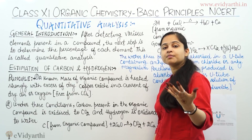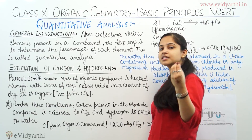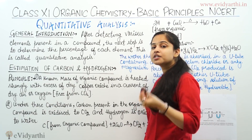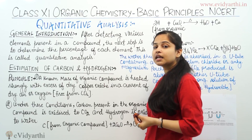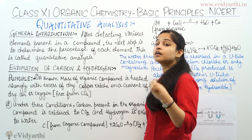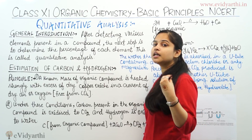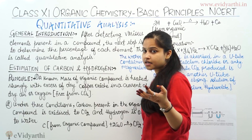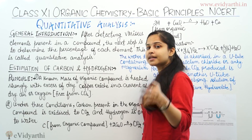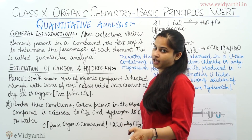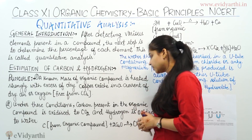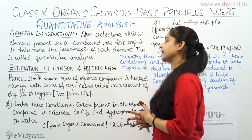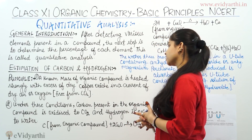In Qualitative Analysis, we do just the detection of elements. And in Quantitative Analysis, we determine the percentage amount of the elements present in the given organic compound. Moving on, first — estimation of carbon and hydrogen. Suppose the organic compound's carbon and hydrogen detection has been done; now we need to know how much carbon and hydrogen is present in that particular organic compound.